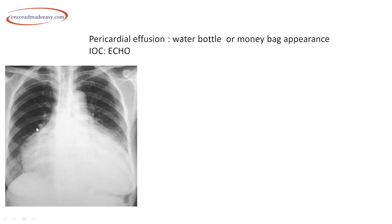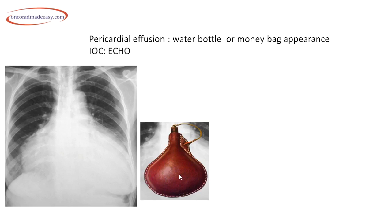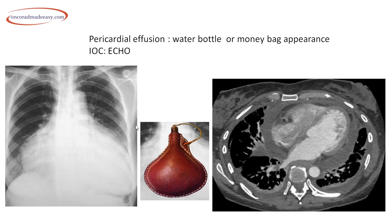On this X-ray there is massive cardiomegaly — the enlarged heart gives a water bottle or money bag appearance, typical of pericardial effusion. On CT, a thick fluid layer surrounding the heart confirms pericardial effusion. The investigation of choice for pericardial effusion is echocardiography.